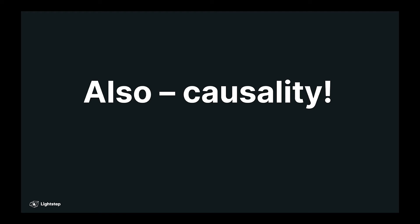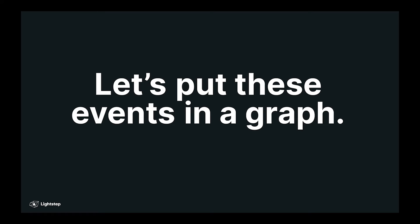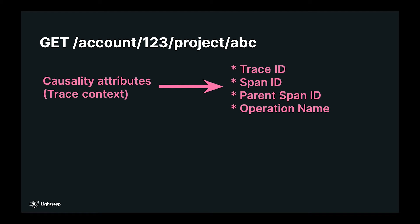Also we care about causality. A leads to B leads to C. So we want to take these events and put them in a graph. And the way we do that is by adding more attributes to the operation. There are four specific attributes that you need. The trace ID, which represents the overall transaction that these events are occurring in. The span ID, which represents the operation these events are occurring in. The parent span ID, which represents the operation that caused this operation. And finally, a stable name for the operation so that you can compare across multiple runs of the same operation.